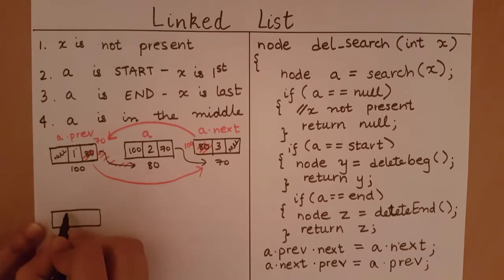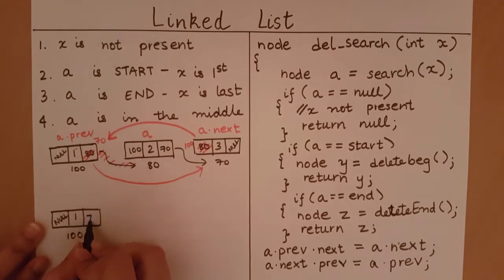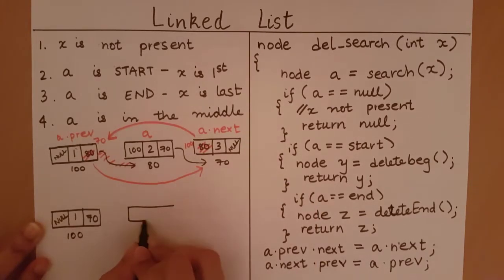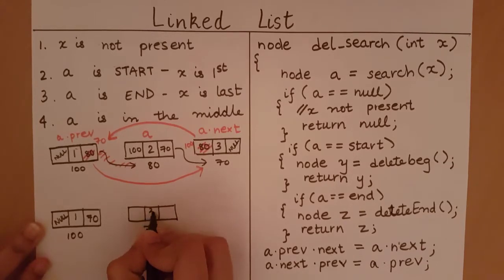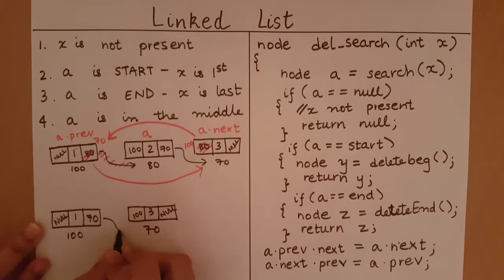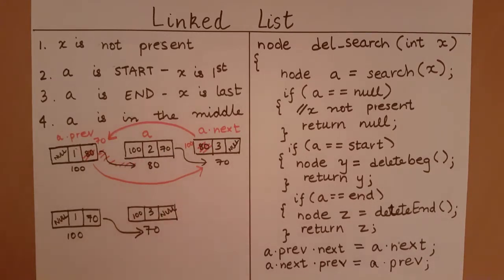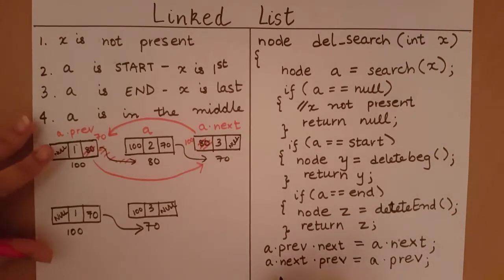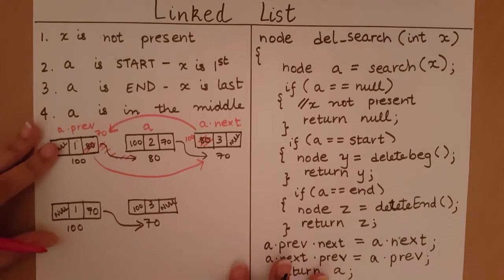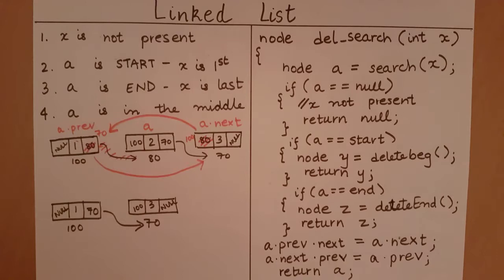We have the very first node, and over there the next address is 70. So at address 70 we get the block which is exactly what we want — we have deleted element 2. With this we have completed our deletion operation and now we are ready to return the node which we have deleted, which is node a. With that we come to the end of our searching and deleting function, and we can close this function.